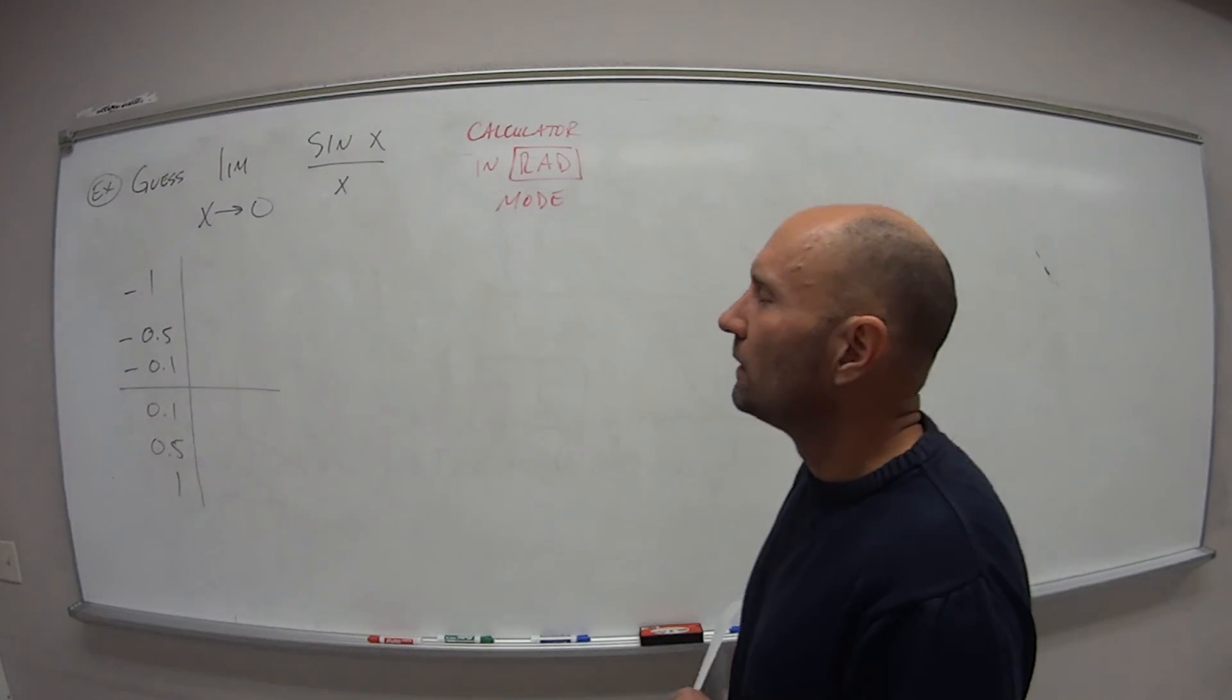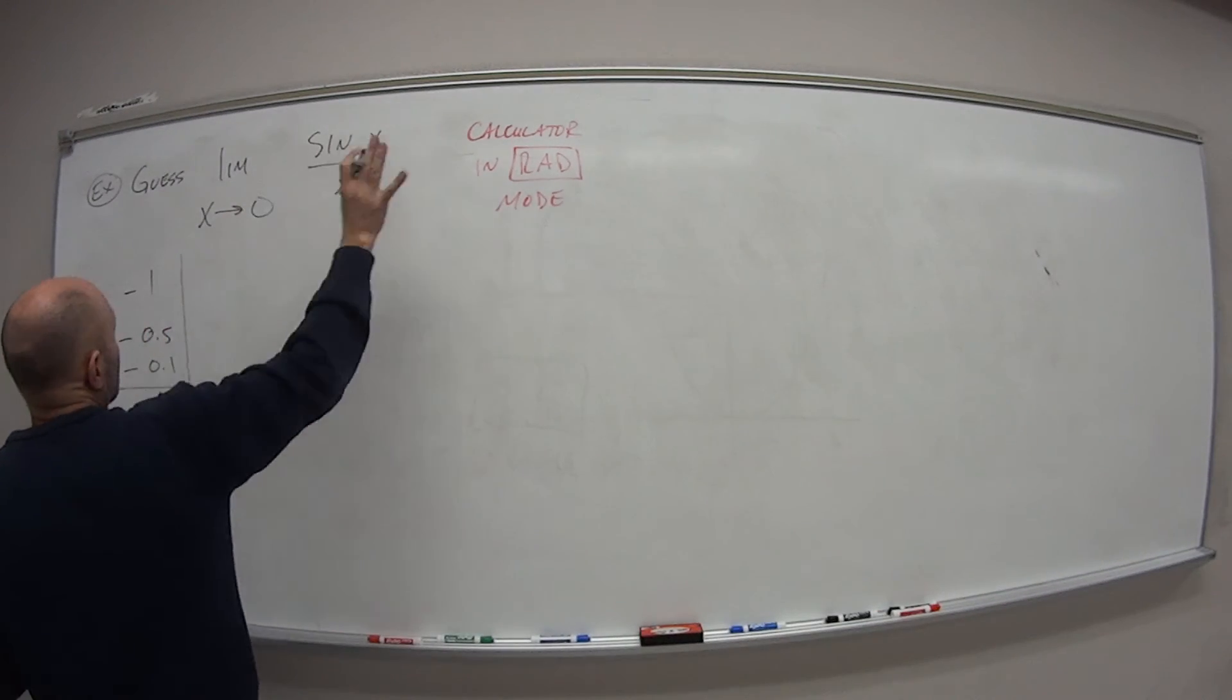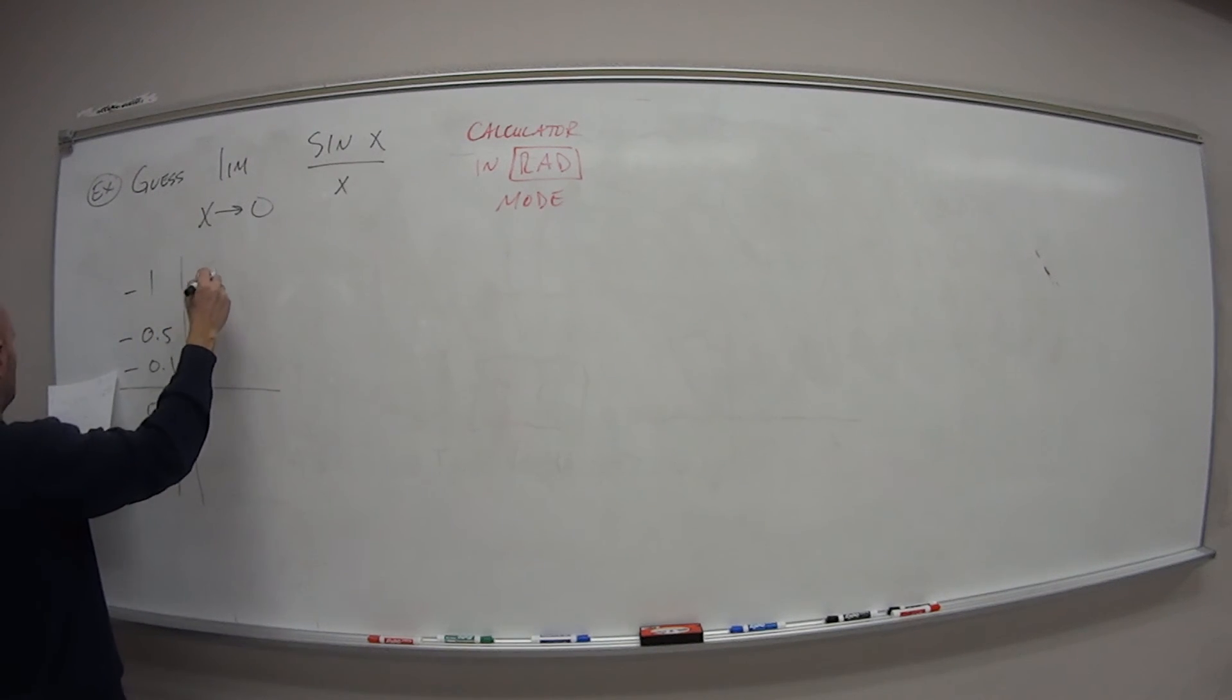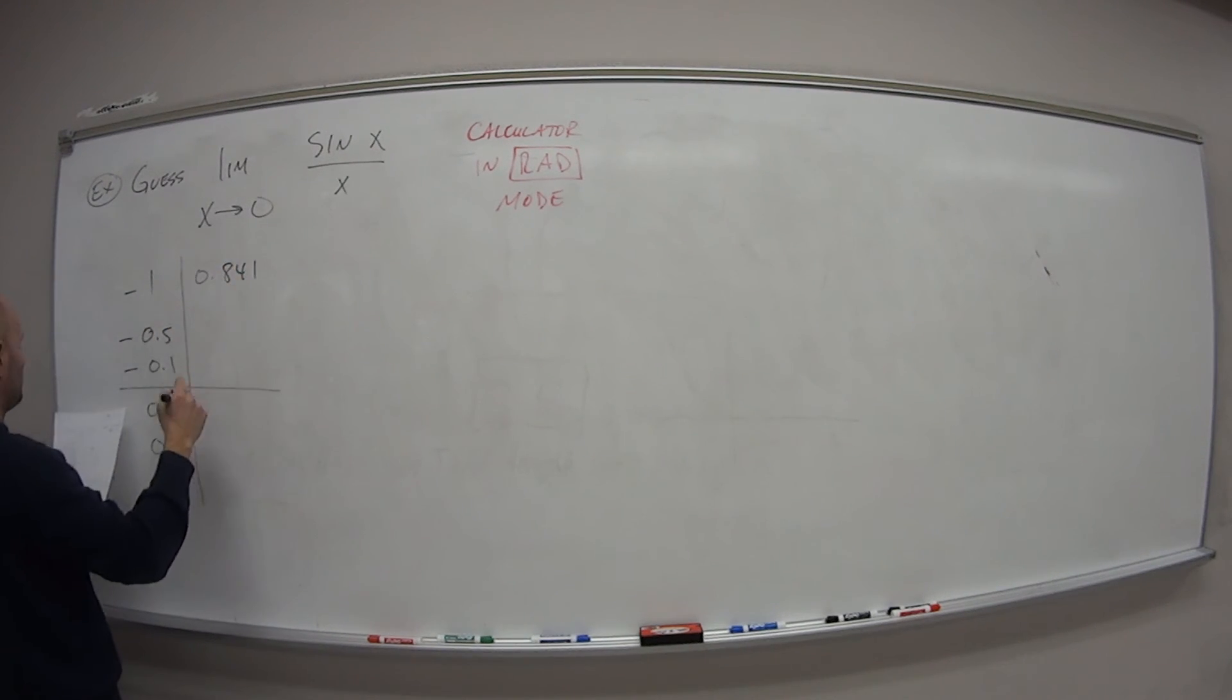Alright, welcome back. So if you use your calculator, you're in radian mode. When it's at negative 1, you should have gotten 0.841. At negative 0.5, you should have got 0.959. And at negative 0.1, you should have got 0.998.